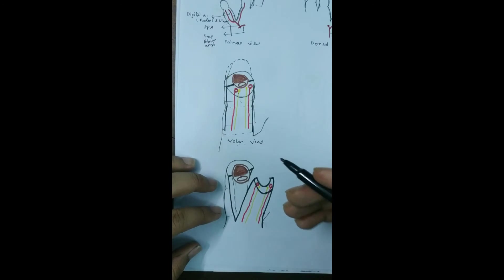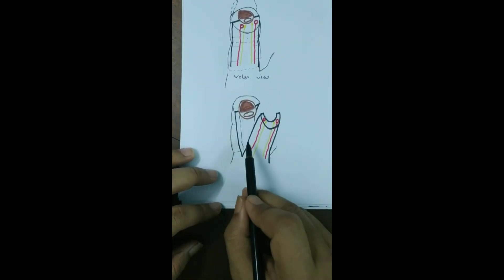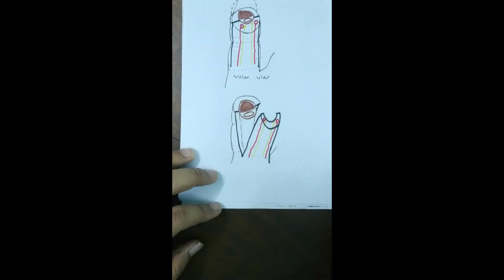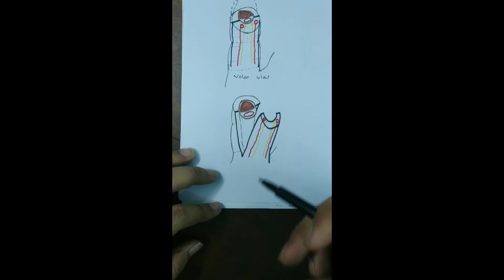We encounter the perforators at some point and we use bipolar diathermy. After flap elevation, the flap will look like this. When we get enough advancement, we advance the flap and stitch it directly.